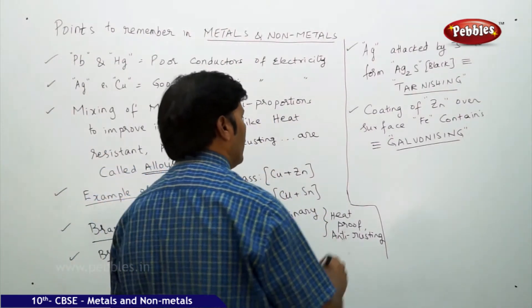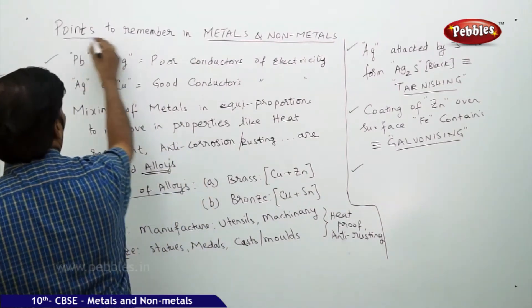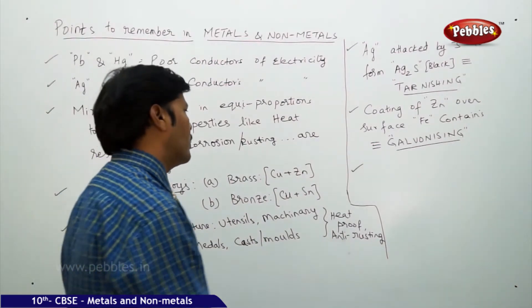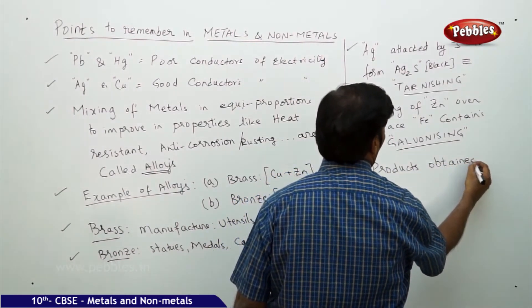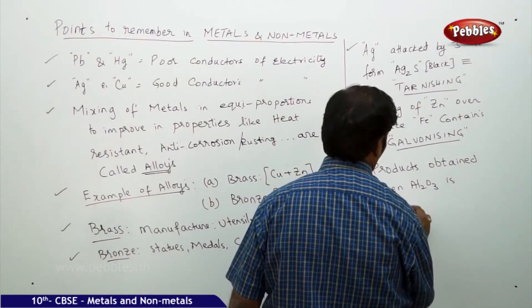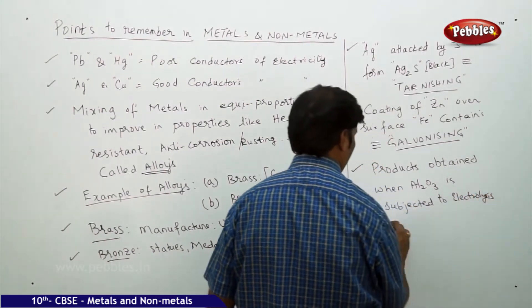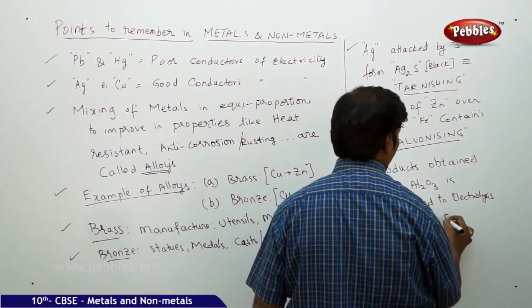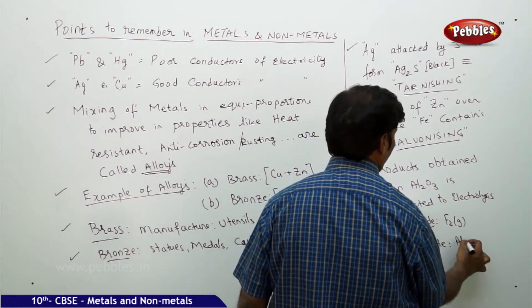What are the products obtained when Al2O3 is subjected to electrolysis? At the anode we get fluorine gas, and at the cathode we get aluminum solid.